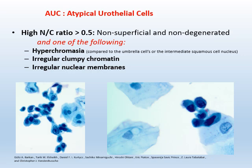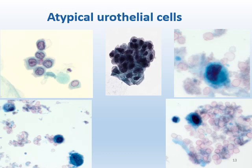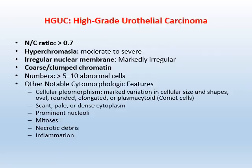The next diagnostic category is AUC — atypical urothelial cells. The diagnostic criteria are: for non-superficial and non-degenerated cells, increased NC ratio of greater than 0.5, plus one of the following nuclear features: hyperchromasia, irregular clumpy chromatin, or irregular nuclear membrane. Pictures of AUC all show increased NC ratio; some clusters show irregular nuclear membrane, some show nuclear hyperchromasia, some show irregular clumpy chromatin.